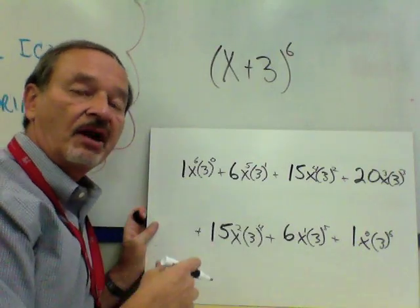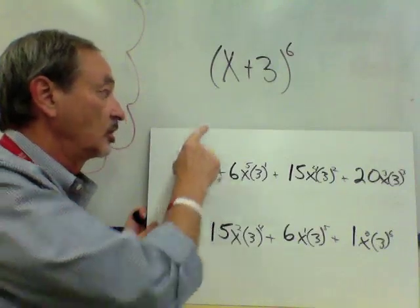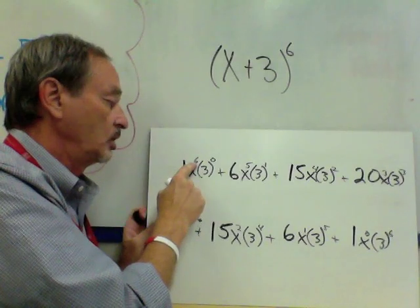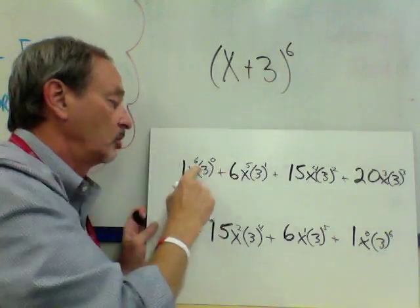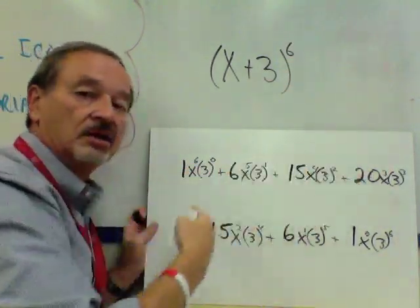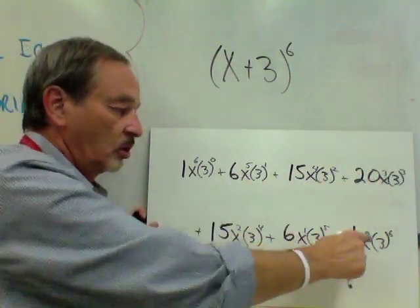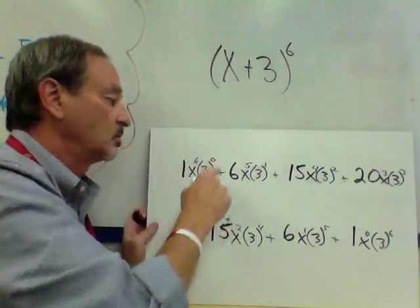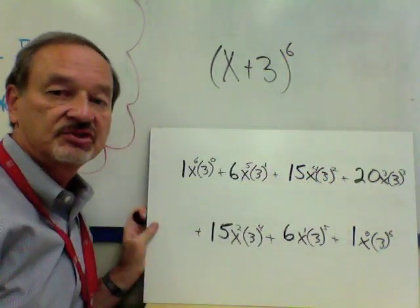Then we laid in the powers of the two factors. For the first factor X, we start with the binomial's power — 6 — and assign sequentially lower powers: 6, 5, 4, 3, 2, 1, 0. For the second term, we start with 0 and go up: 0, 1, 2, 3, 4, 5, and 6.